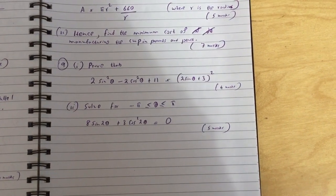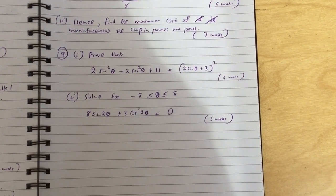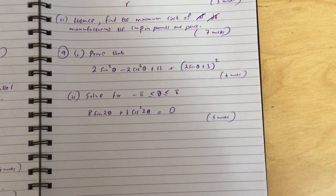Question nine: prove that 2 sine squared theta minus 2 cos squared theta plus 11 equals (2 sine theta plus 3) all squared.